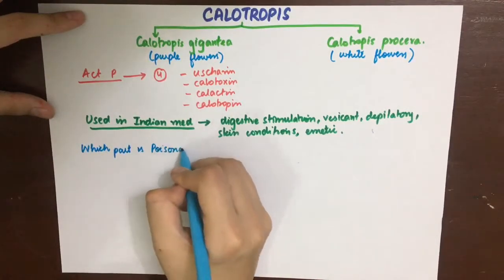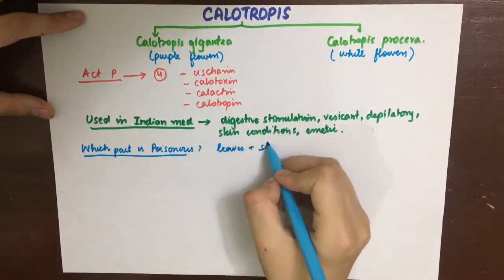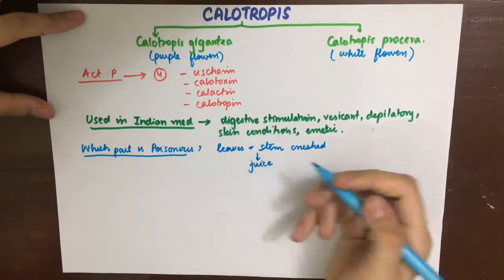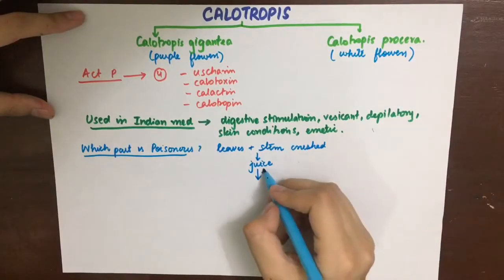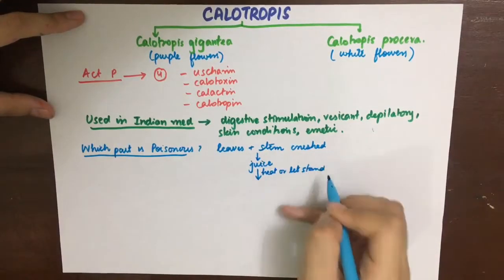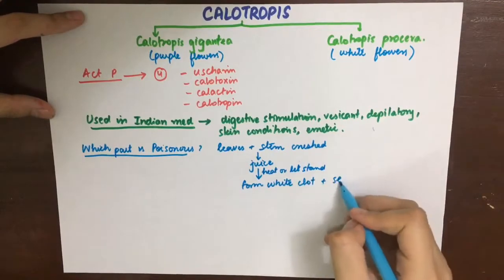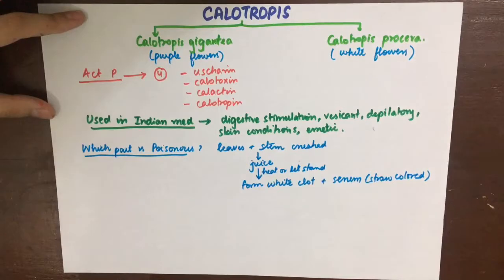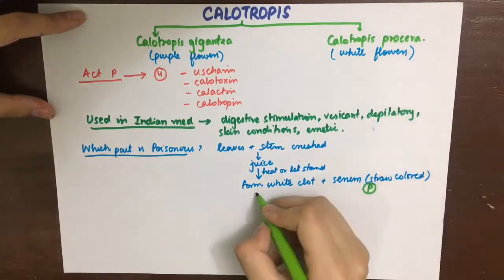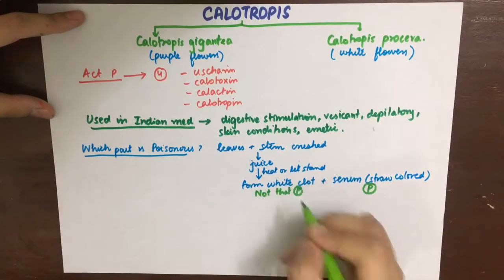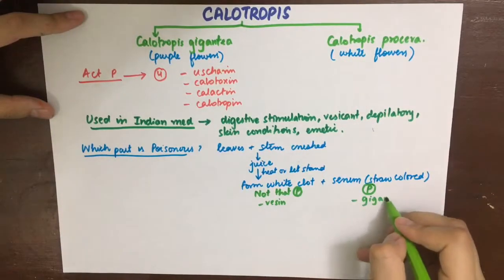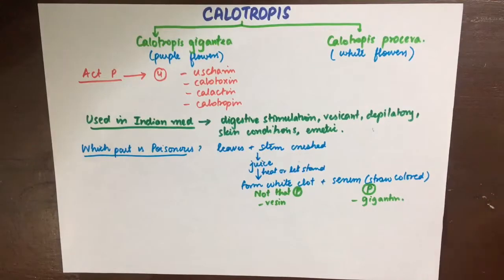The leaves and stem of Calotropis are crushed to yield a white milky and acrid juice. When this milky juice is allowed to stand or is heated, it forms clots like blood does, producing white clots while a straw-colored serum is left behind. The white clot is actually less poisonous, while the straw-colored fluid is more poisonous because it contains an active ingredient known as gigantin.